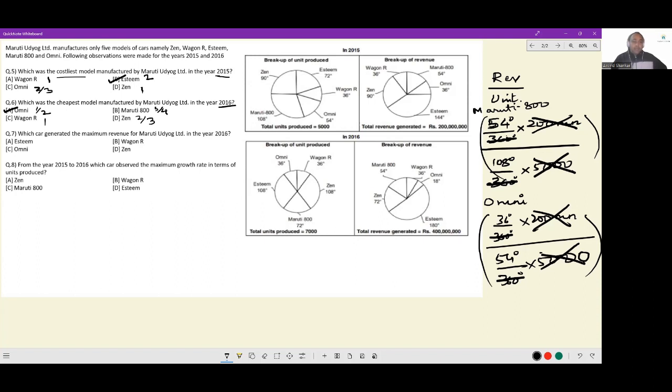Next, which car generated the maximum revenue for Maruti Udyog Ltd in the year 2016? Now wonderfully, what this is asking is, in this last pie chart that you have, which segment has the greatest share? Clearly you can see Esteem is half the revenue generated. So Esteem generated the maximum revenue for Maruti Udyog Ltd in the year 2016.